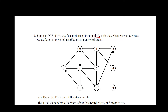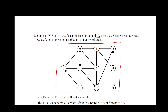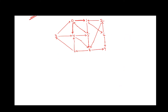This is the graph given to us. It is a directed graph G. We are asked to draw the DFS tree of the given graph and to find the number of forward edges, backward edges and cross edges. We have to draw the DFS tree starting from node 0.